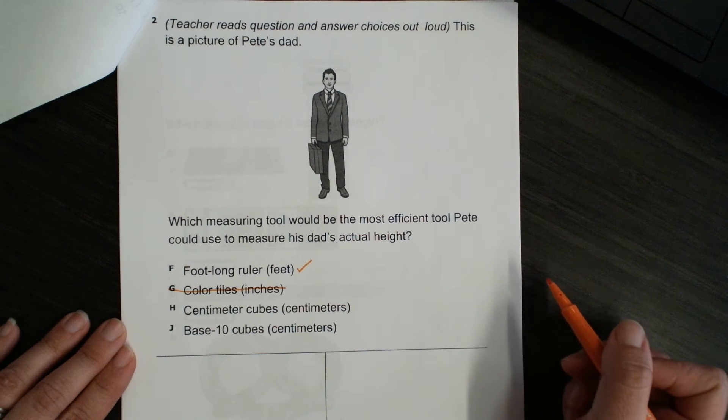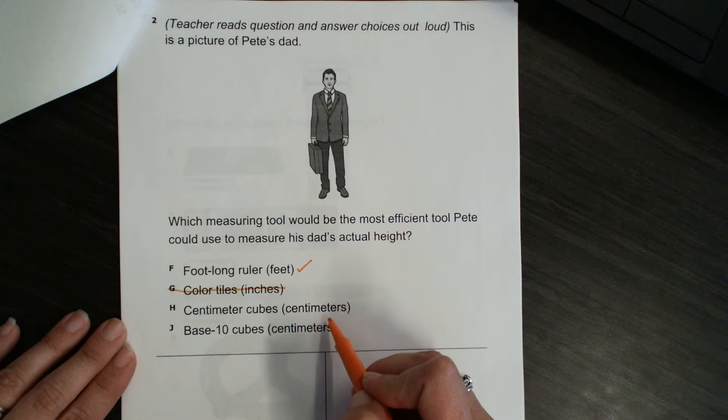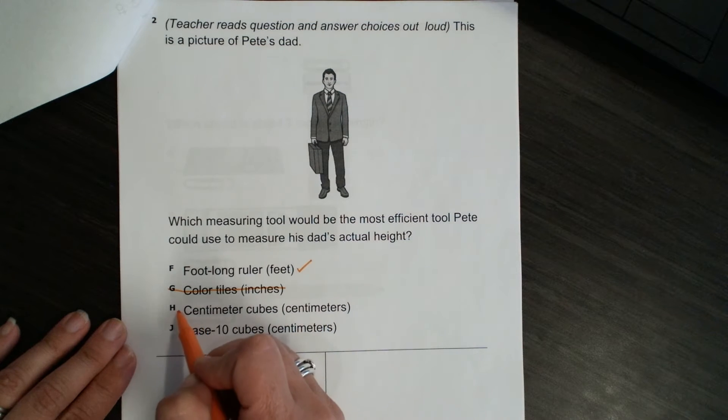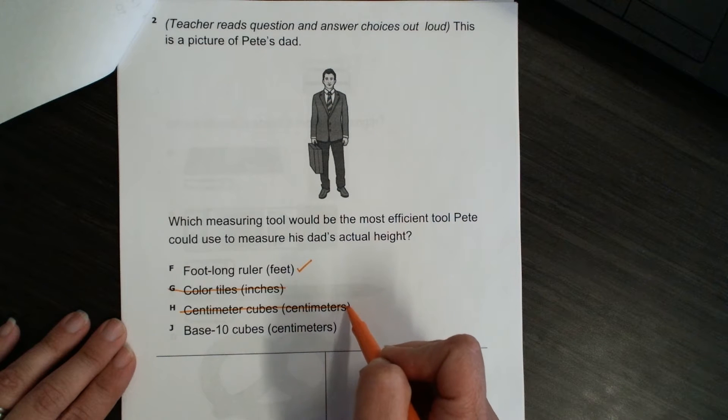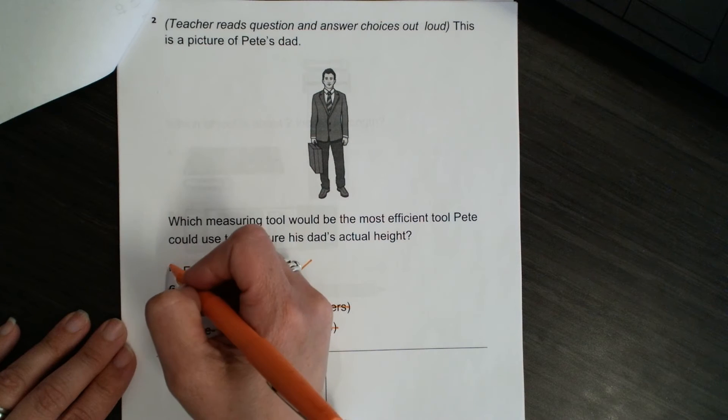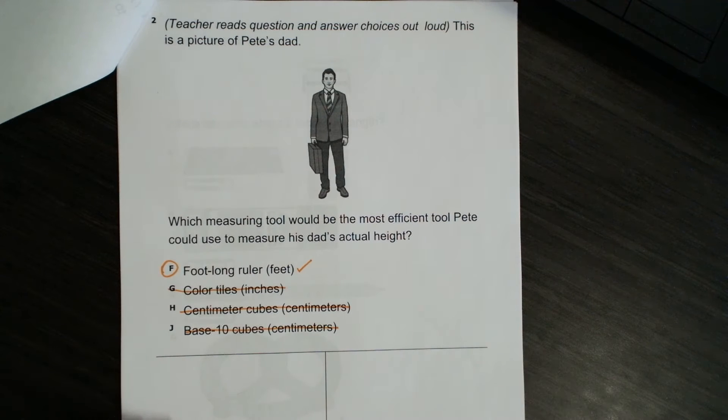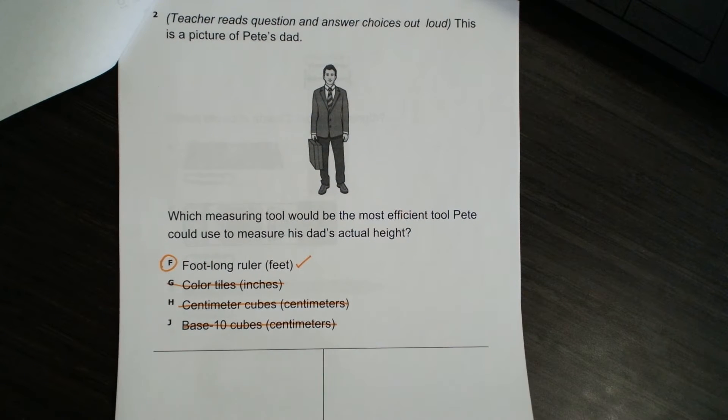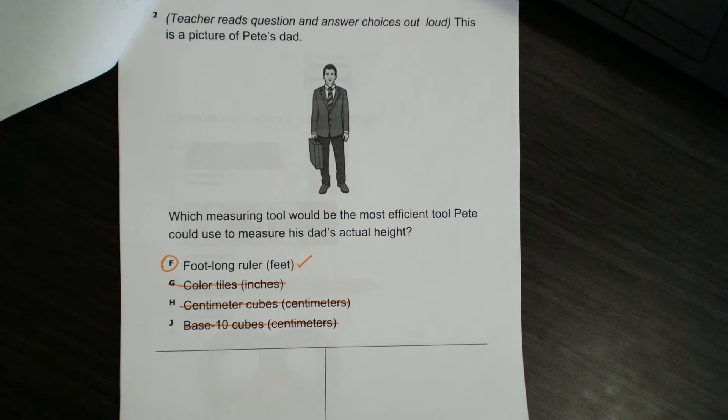What about centimeter cubes? Centimeters. No, that would be even smaller. Or base 10 cubes, also centimeters. No, centimeters are too tiny to measure the height of Pete's dad. So, our answer here is a foot-long ruler. We would measure Pete's dad in feet.